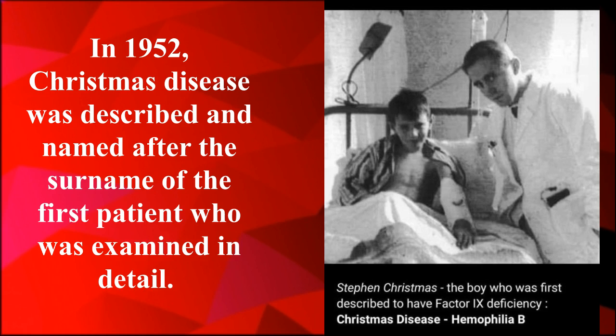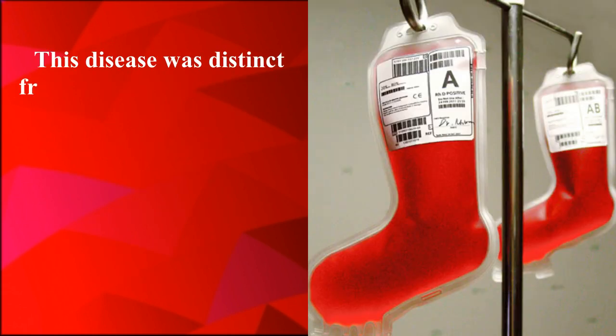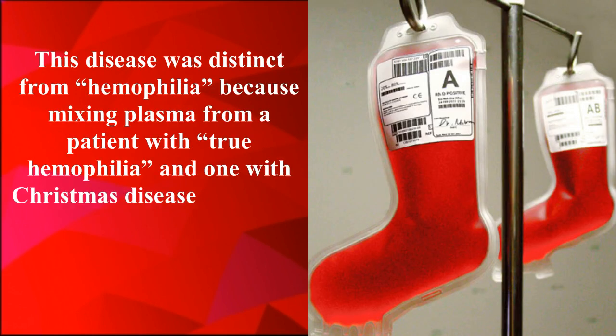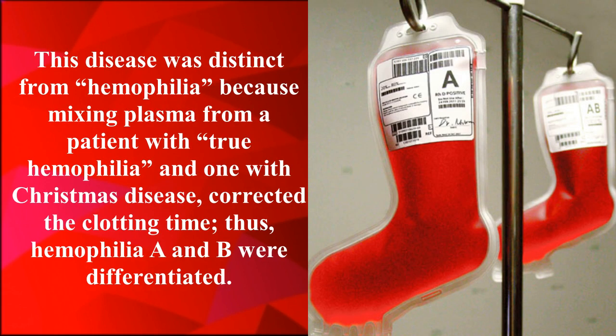In 1952, Christmas disease was described and named after the surname of the first patient examined in detail. This disease was distinct from hemophilia because mixing plasma from a patient with true hemophilia and one with Christmas disease corrected the clotting time, thus differentiating hemophilia A and B.